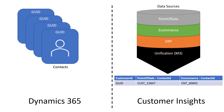In Dynamics, we have a bunch of contacts. In Customer Insights, we've already set up different data sources — we have point-of-sale, e-commerce, ERP, and so on. We've gone through unification, and we have our customer table at the bottom, where we have our GUID that Customer Insights assigns to the unique profile, as well as the contact IDs or keys from each of the tables that we brought in.